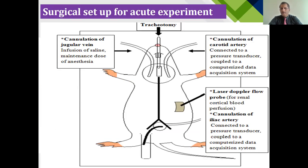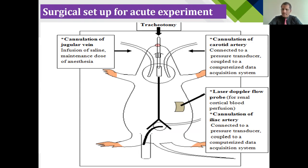This was the surgical setup. A tracheotomy was performed, then the jugular vein was cannulated to infuse saline and maintain the dose of anesthesia. The carotid artery was connected to a pressure transducer coupled with a computerized data acquisition system. We performed abdominal incision surgery, cannulated the iliac artery, and placed a probe on the kidneys to measure renal cortical blood perfusion, also connected to the pressure transducer and computerized data acquisition system.